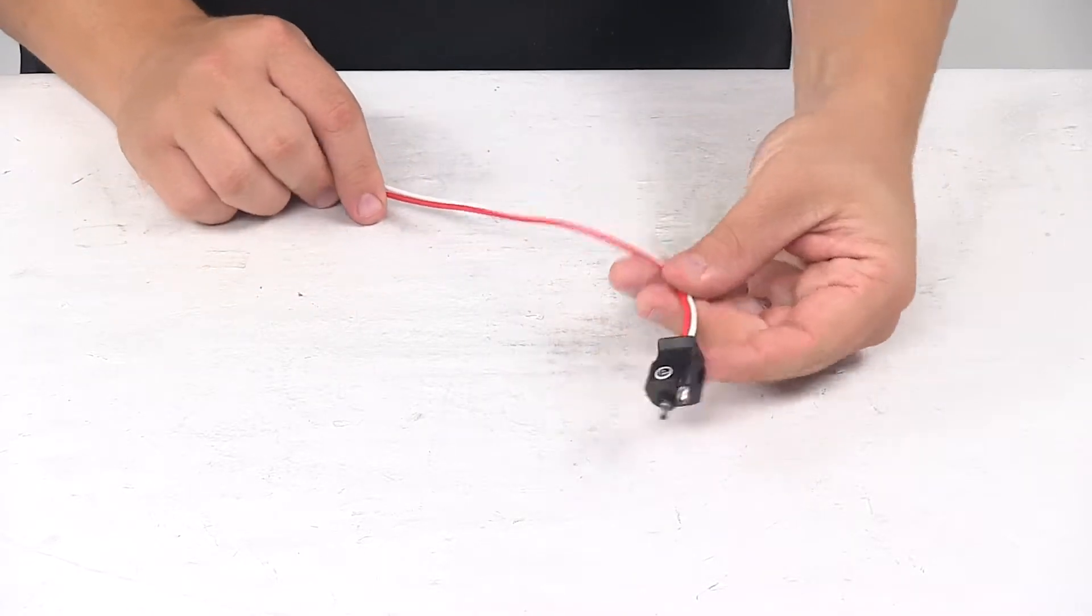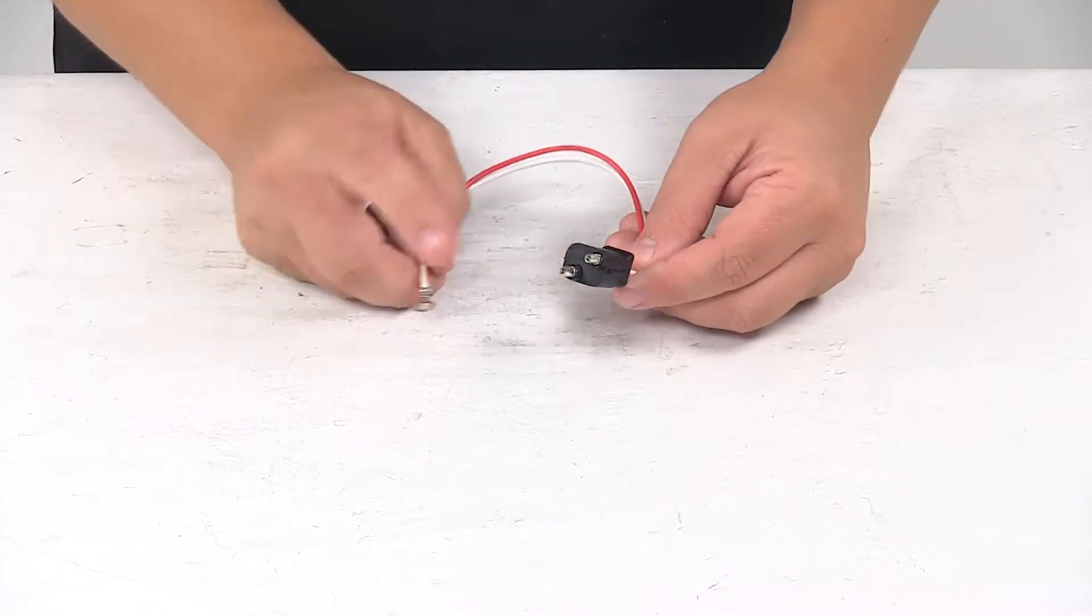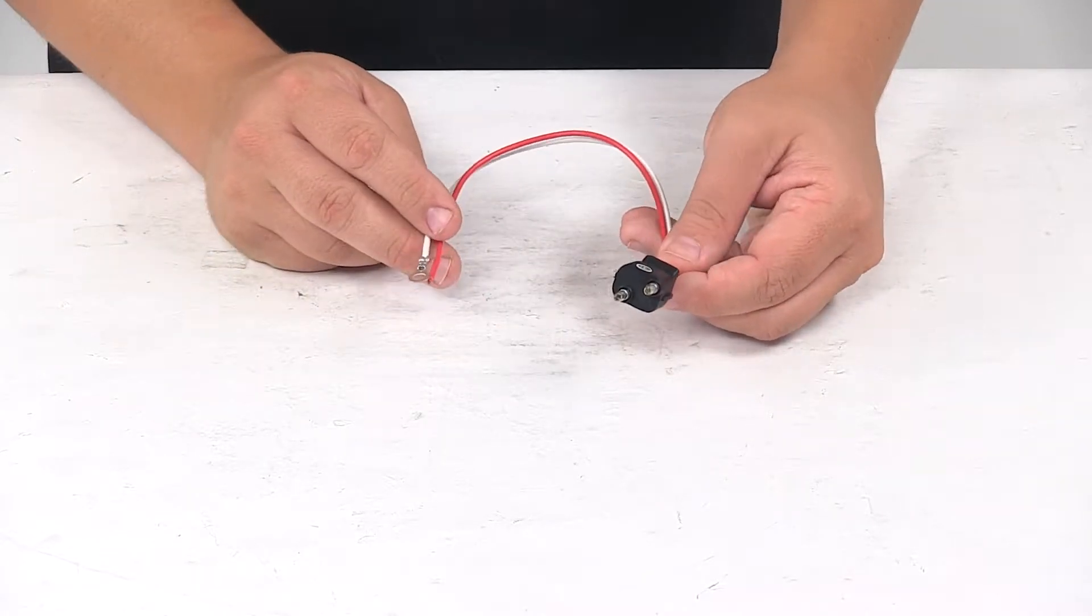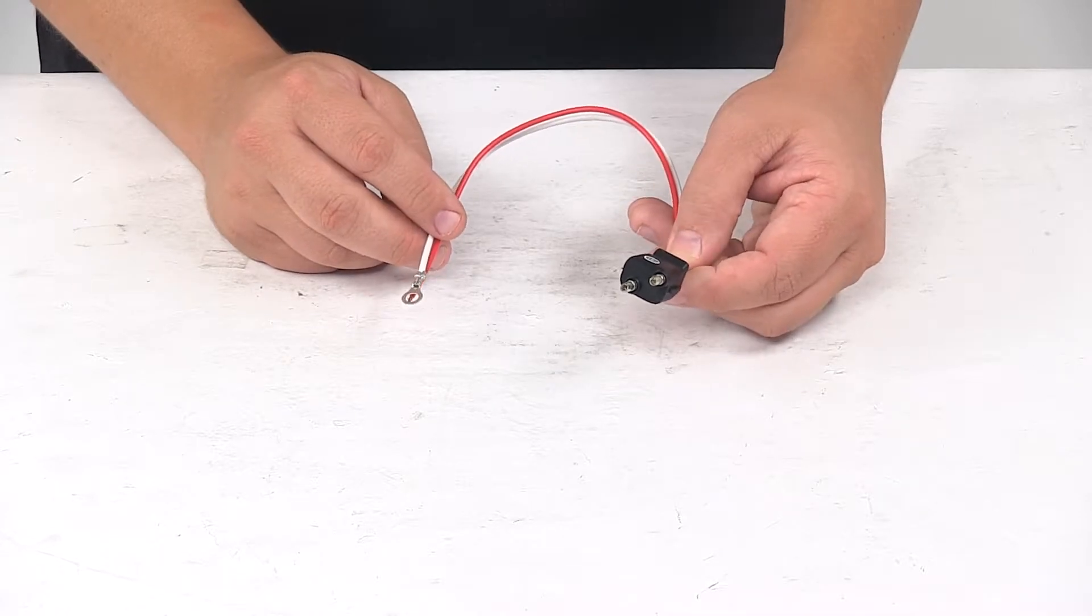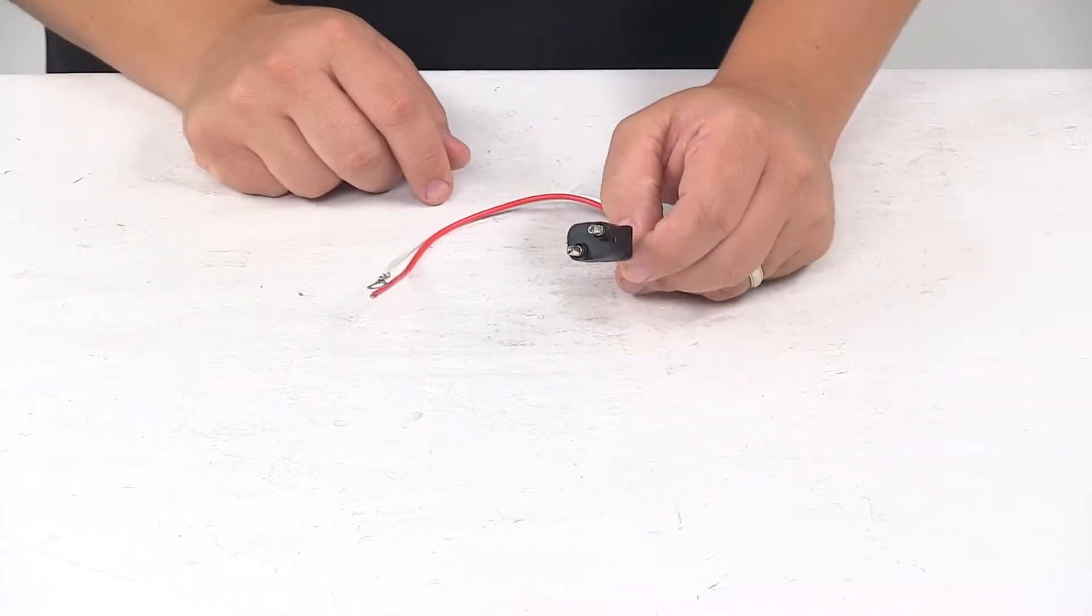Today we're taking a look at a two-wire pigtail wiring harness for trailer lights. This pigtail with the two-prong plug allows you to wire your light to your trailer and is designed specifically for use with side marker clearance and utility lights.